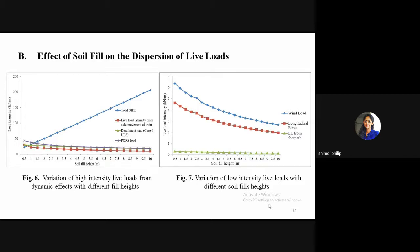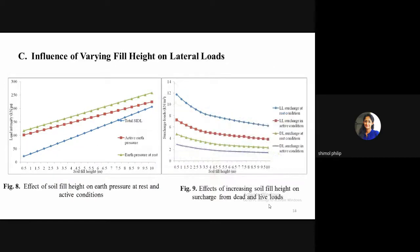The live load from footpath is negligible, and wind load effect is more than longitudinal loads. A study by Sharma and Sinha on ROB box culvert neglected longitudinal forces from braking and traction when high earth cushions are used. The lateral earth pressure at rest and active conditions increases with increase in fill height — similar observations by Tao et al., who varied soil field height to box culvert width ratio. The lateral earth pressure due to surcharge loads from live and dead loads decreases with increase in fill height.